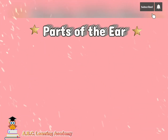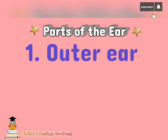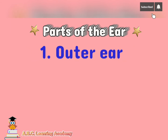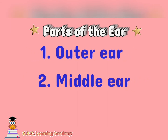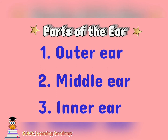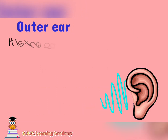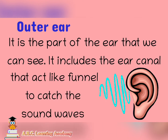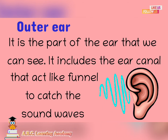Now, let's study the parts of the ear. There are three parts of the ear: the outer ear, the middle ear, and the inner ear. The outer ear is the part of the ear that we can see. It includes the ear canal that acts like a funnel to catch the sound waves.